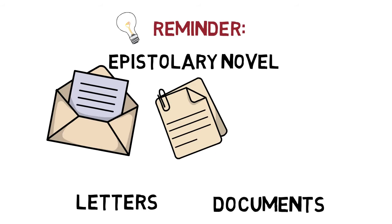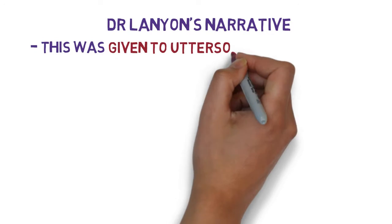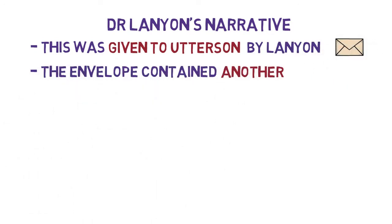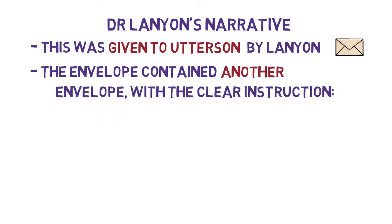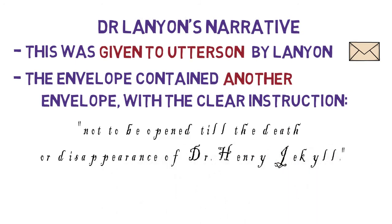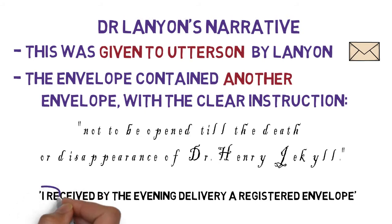The chapter is entitled Dr Lanyon's Narrative, and remember that this was given to Utterson by Lanyon in an envelope. On opening the envelope, he found another envelope inside with the clear instruction: 'Not to be opened till the death or disappearance of Dr Henry Jekyll.' It is this document that we now have access to in this chapter. The opening of the chapter, where we see the first person pronoun in the line 'I received by the evening delivery of registered envelope' — that pronoun 'I' is referring to Lanyon.